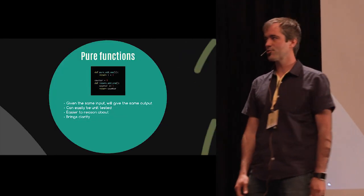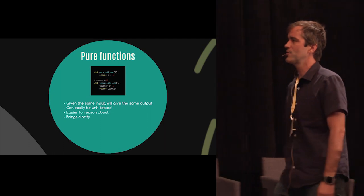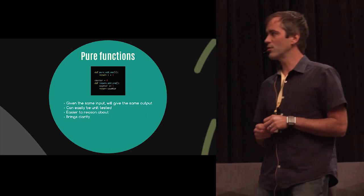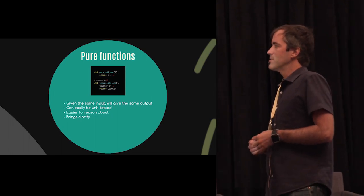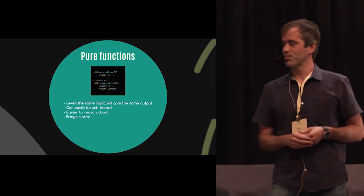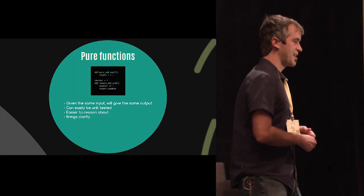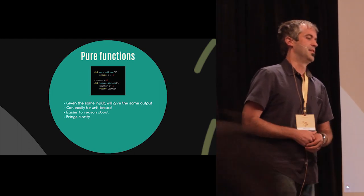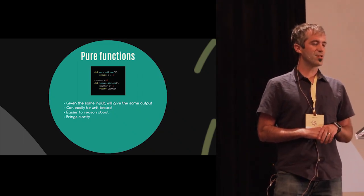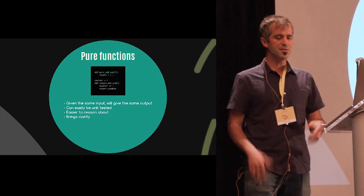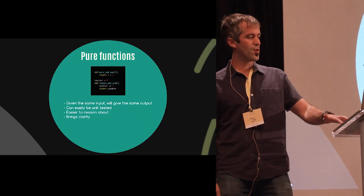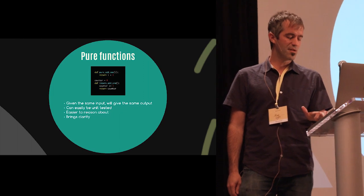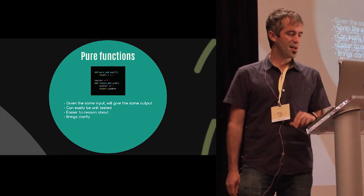Pure functions in functional programming are functions limited to their own scope. Given the same input, they will provide the same output — that's a nice guarantee and easy to reason about. There are no side effects, you can easily unit test these functions, and that brings clarity to the process. Knowing that a function is limited to its scope is a nice guarantee to have.